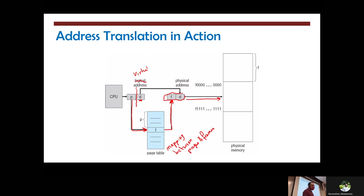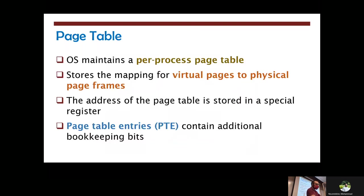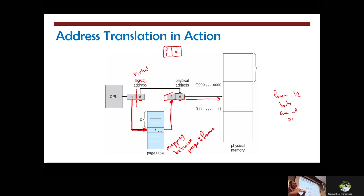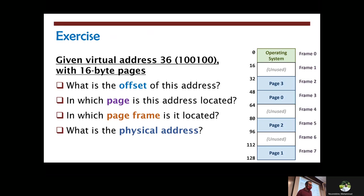Clarification: we do concatenation, not addition, when combining the frame address with the offset. Frame addresses are organized so their lower 12 bits are all zeros — they always point to the zeroth address in each page. So adding the offset is equivalent to concatenating the two together.